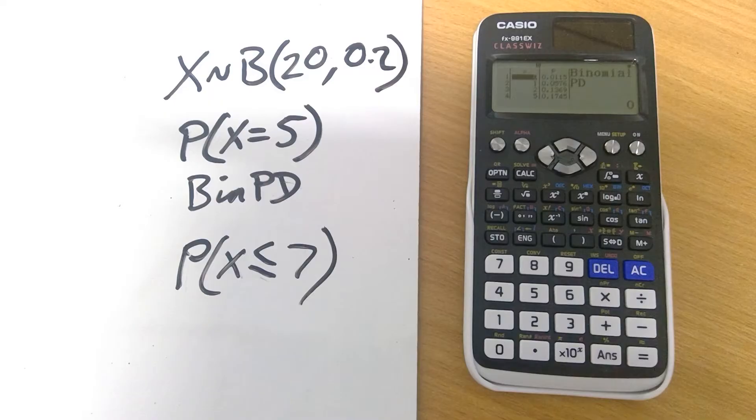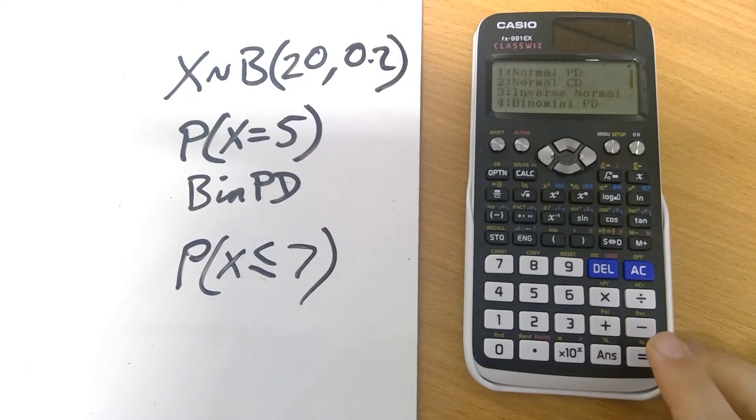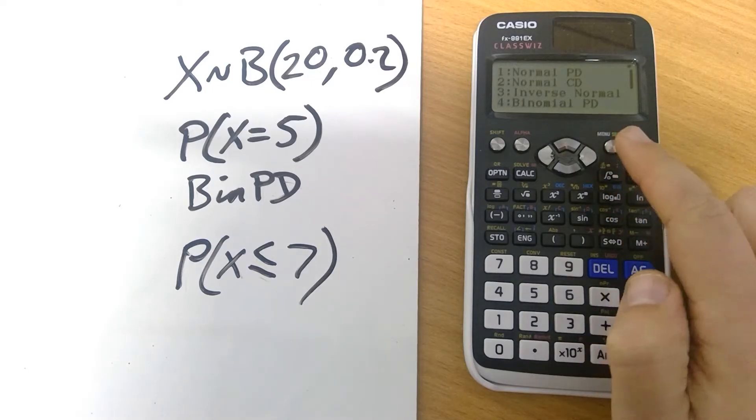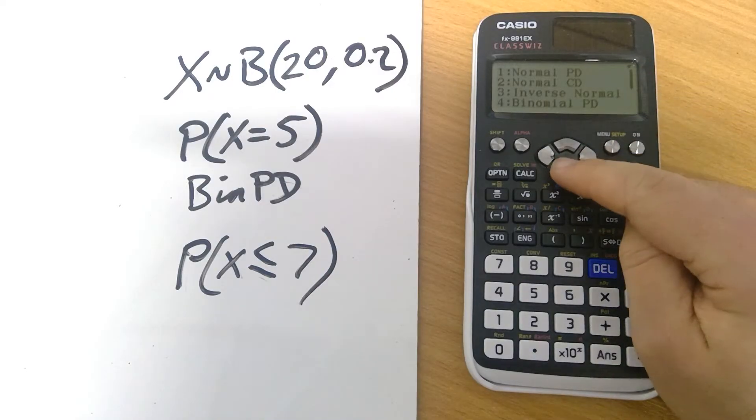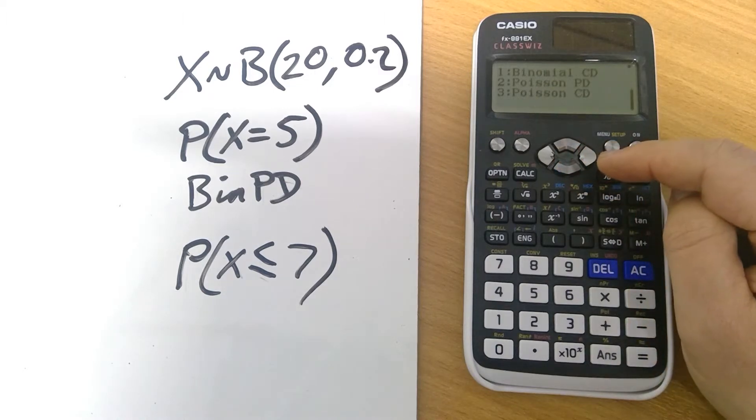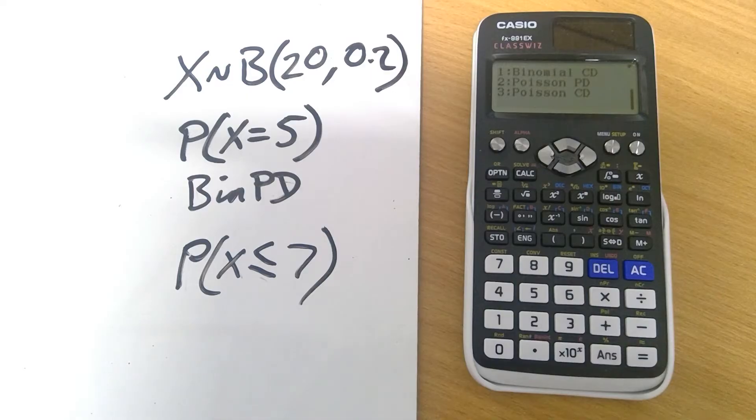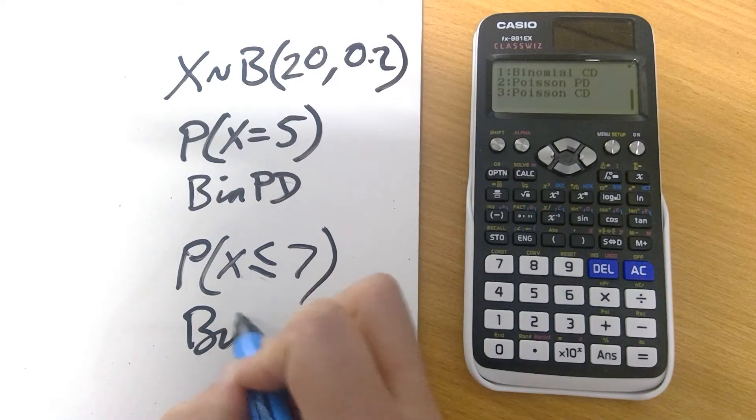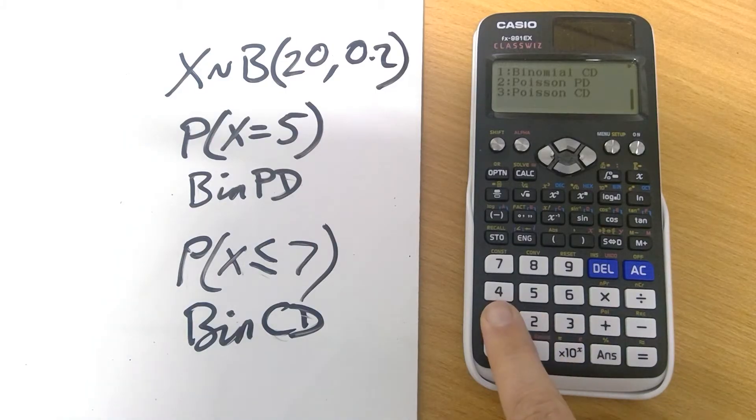Okay, so here we just press menu. We're back into the distribution. That's fine. But here we want to scroll down. Now, if you notice on the right hand side here, there's a little black bar which is indicating how far down the menu we are, there's a whole section here we haven't looked at yet. Simply pressing the down arrow will take us to the next section. And we want binomial CD this time. So this is for binomial cumulative distribution.